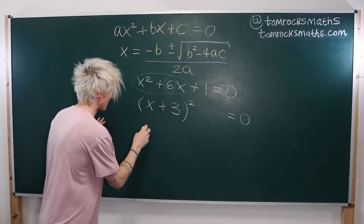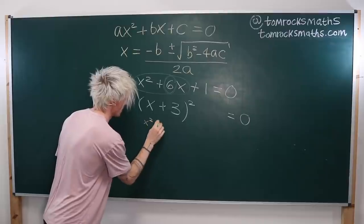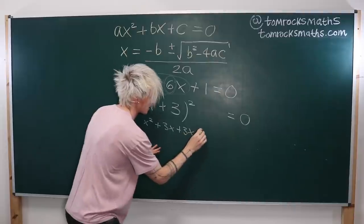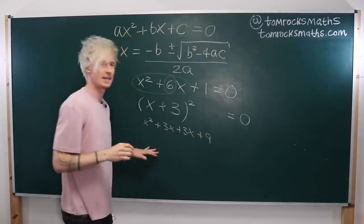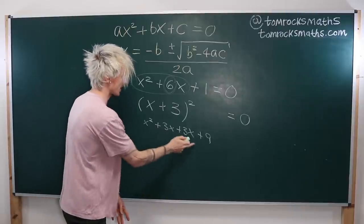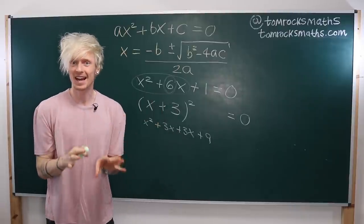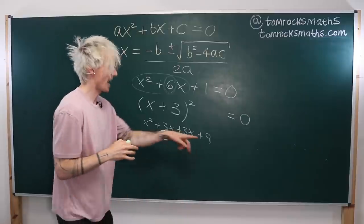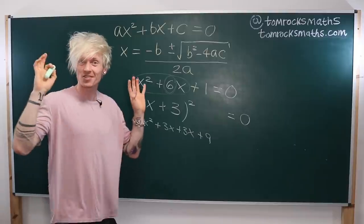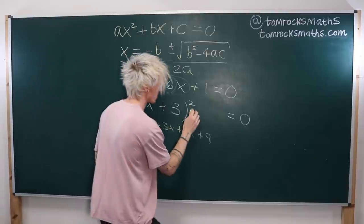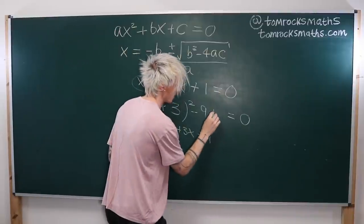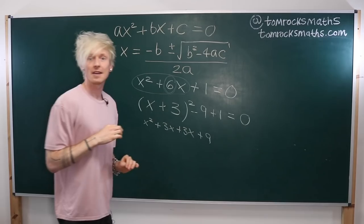If we now expand (x + 3)² we'll get x² + 3x + 3x + 9. We have the x² term we wanted, we have +6x exactly as needed, but we have an extra +9. So to get rid of this extra term we subtract the 9, and then we just have the +1 left over.